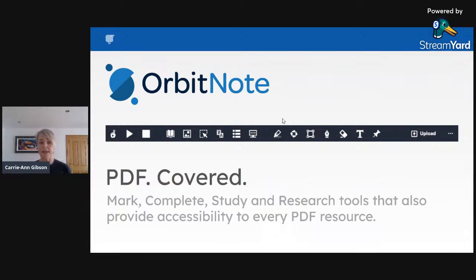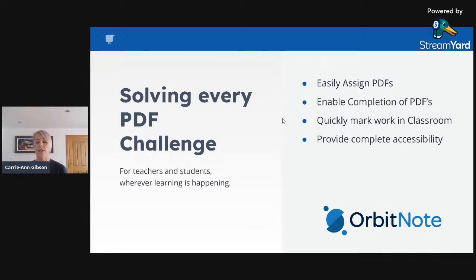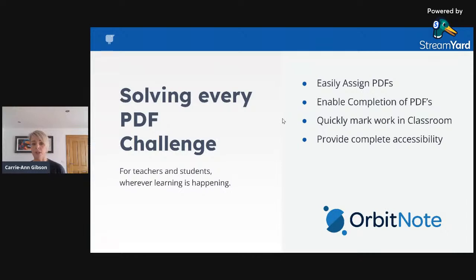I'll also be covering Orbit Note in conjunction with Read and Write. Orbit Note is our newly revamped PDF tool — it brings all the accessibility features of Read and Write plus annotation tools into PDFs. It solves the PDF challenge in the classroom, lets you easily assign PDFs through Google Classroom, enables students to annotate and answer questions on a PDF, and lets teachers quickly mark that work.